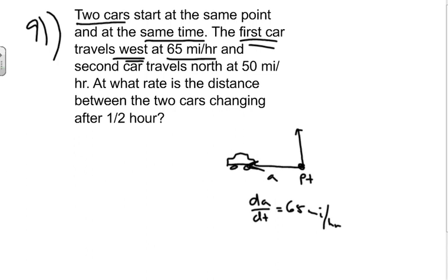And the second car travels north, so it's traveling up this way. We can draw this little car, and we'll call this one B. The second car travels north at 50 miles per hour, so we have dB/dt equals 50 miles per hour.